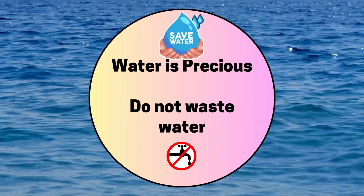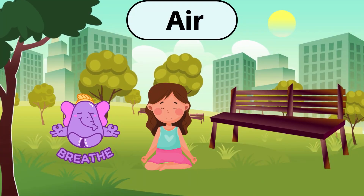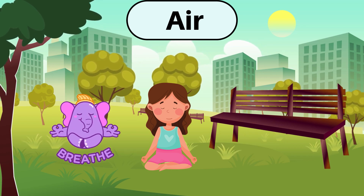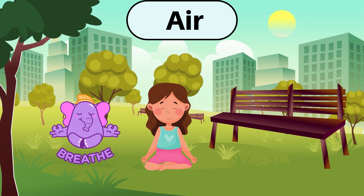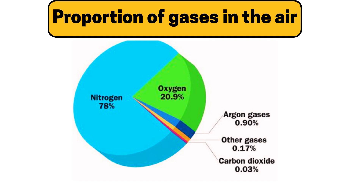Now let's talk about air. Take a deep breath — doesn't that feel great? Air is all around us and it's a mixture of many gases like oxygen, nitrogen, carbon dioxide, etc. You can see that air is a mixture of several gases: there is 78% nitrogen present in air and nearly 21% oxygen, which is necessary for respiration in living things. These are the other gases present in air.